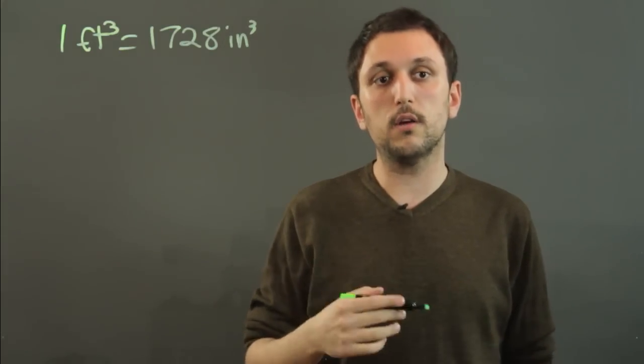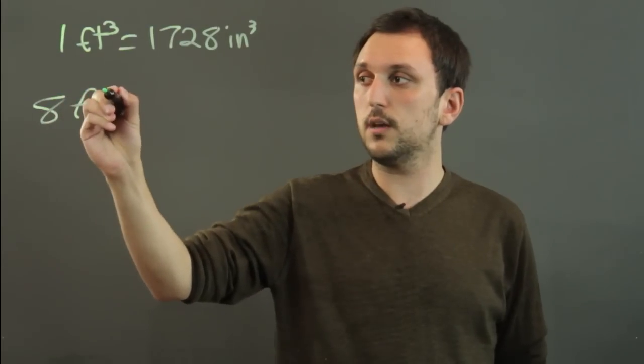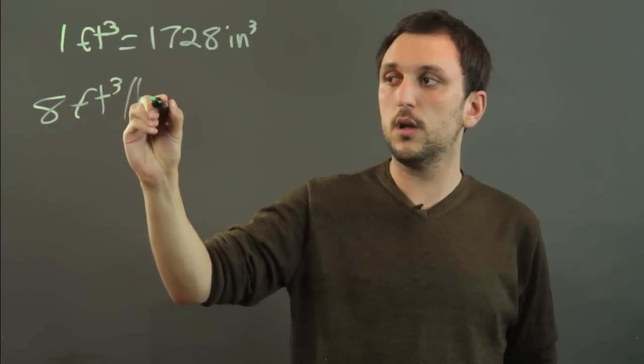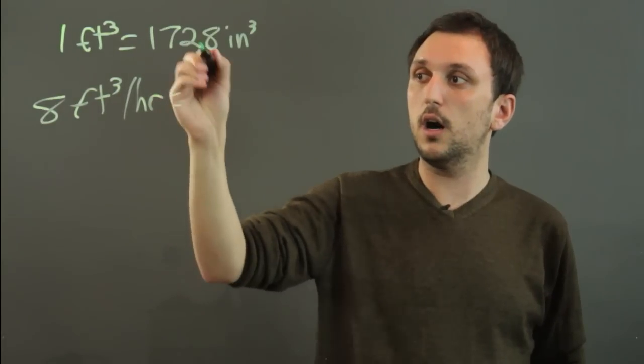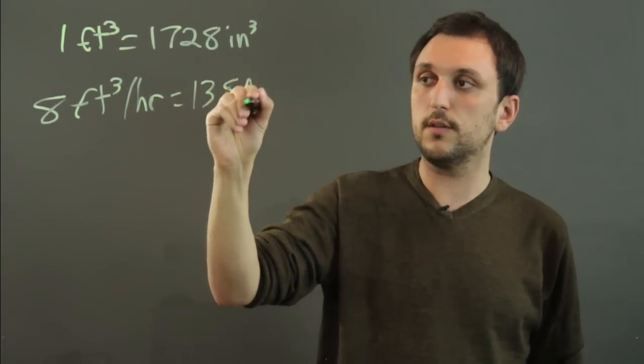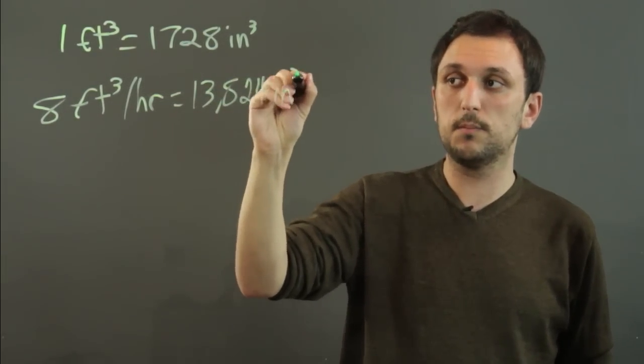Now, let's say you have a flow rate of 8 cubic feet per hour. 8 cubic feet per hour is like saying 13,824 cubic inches per hour.